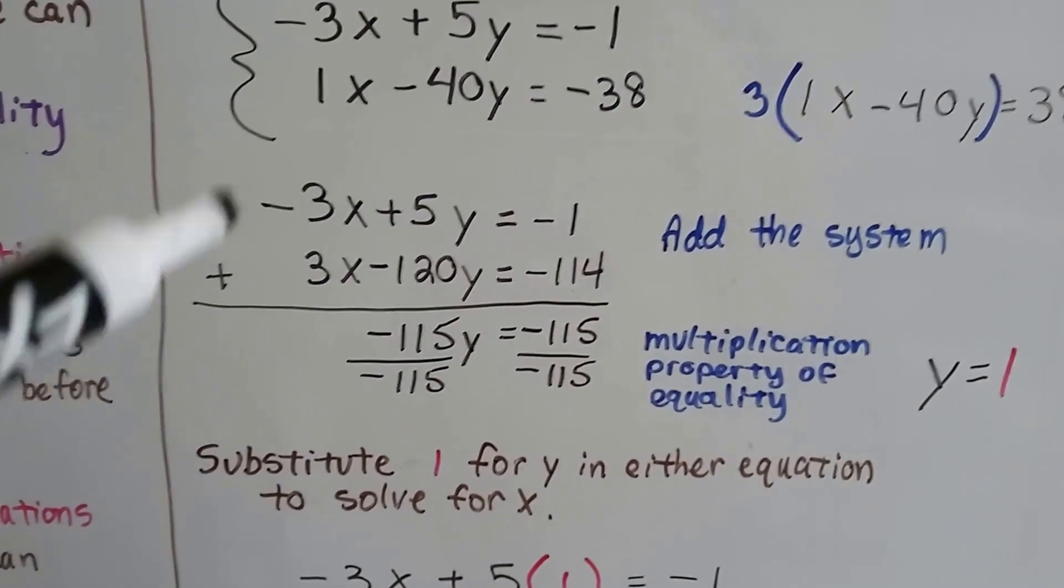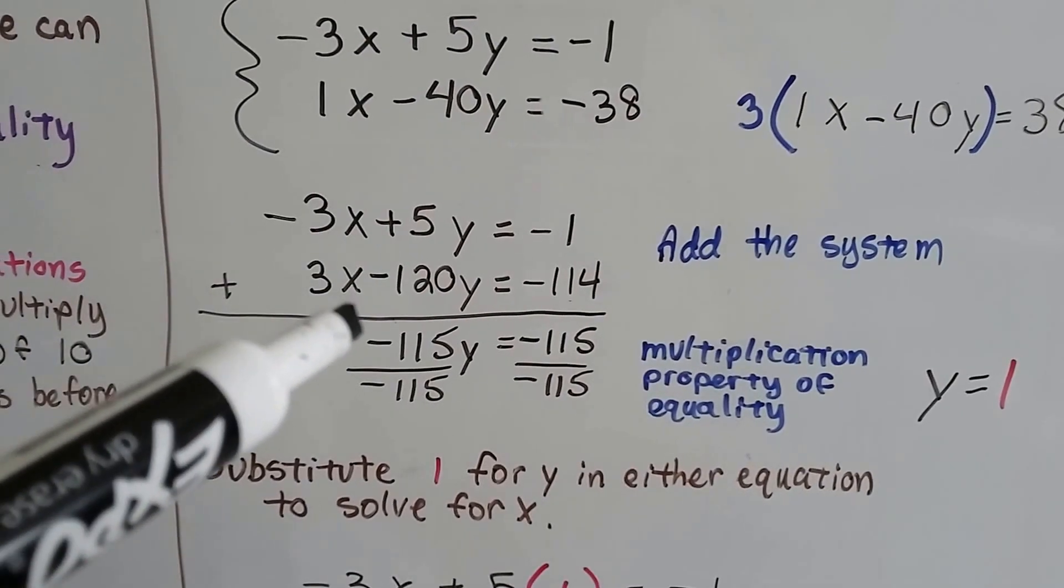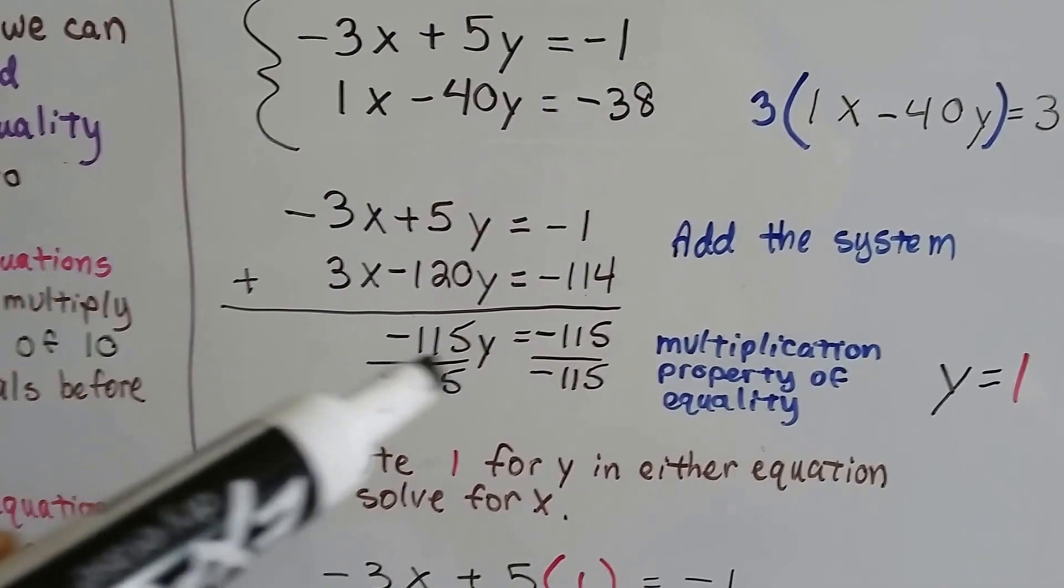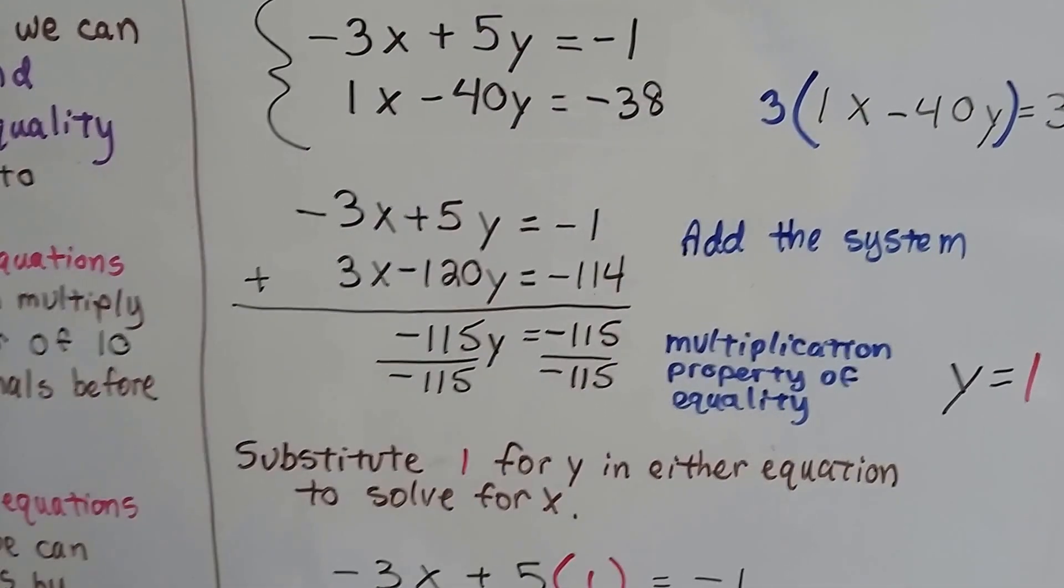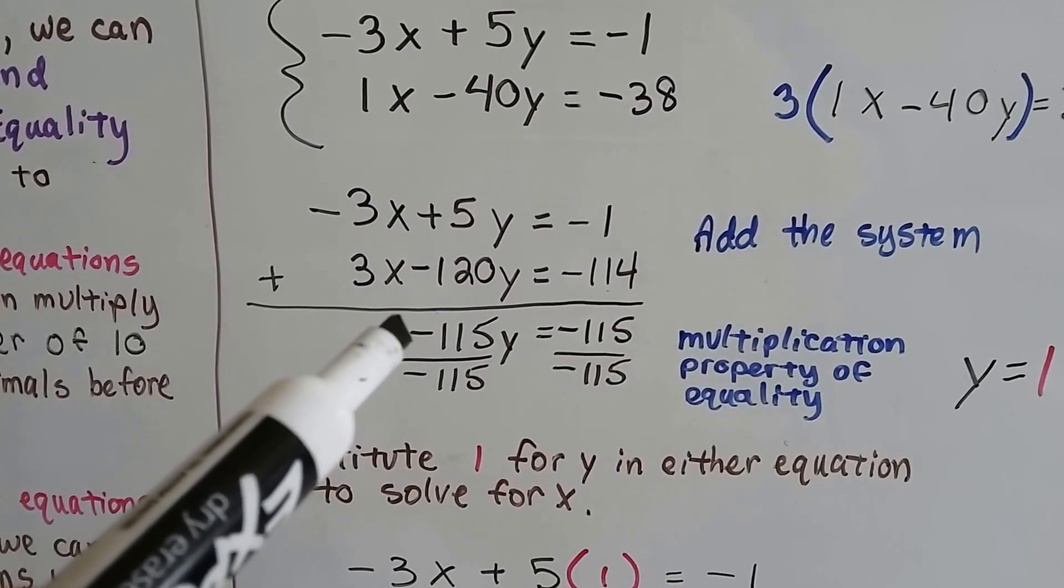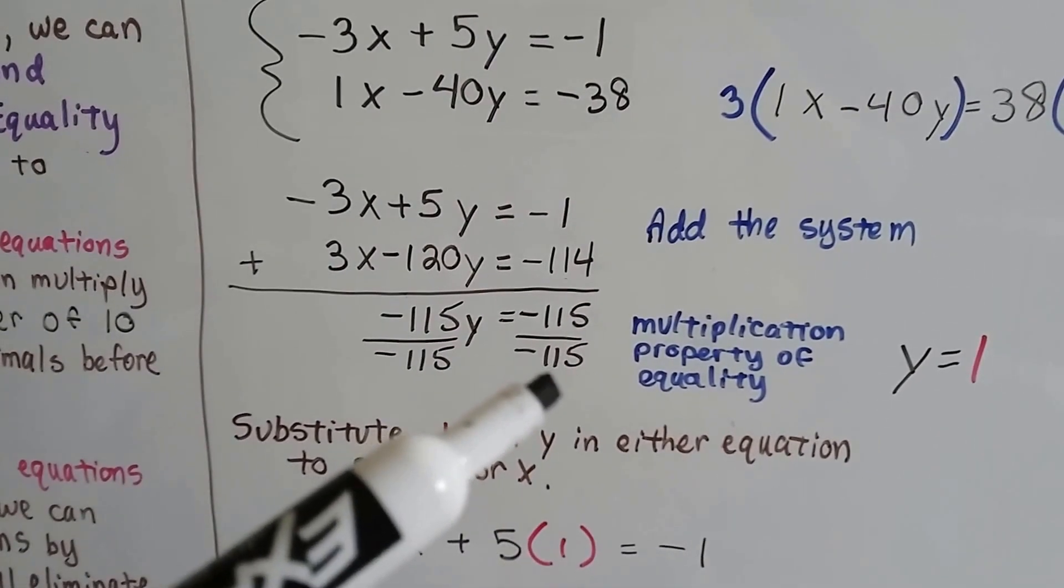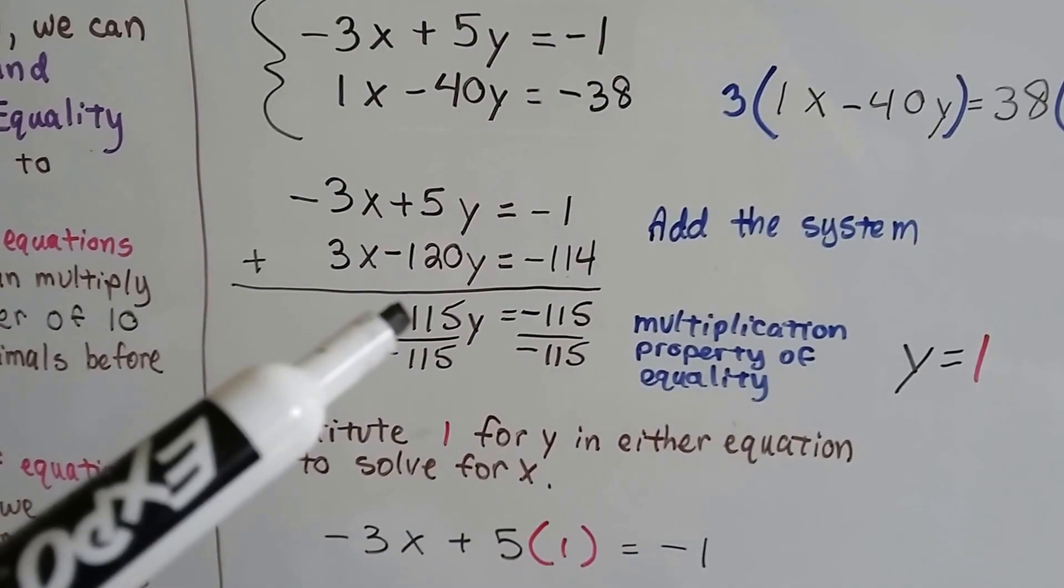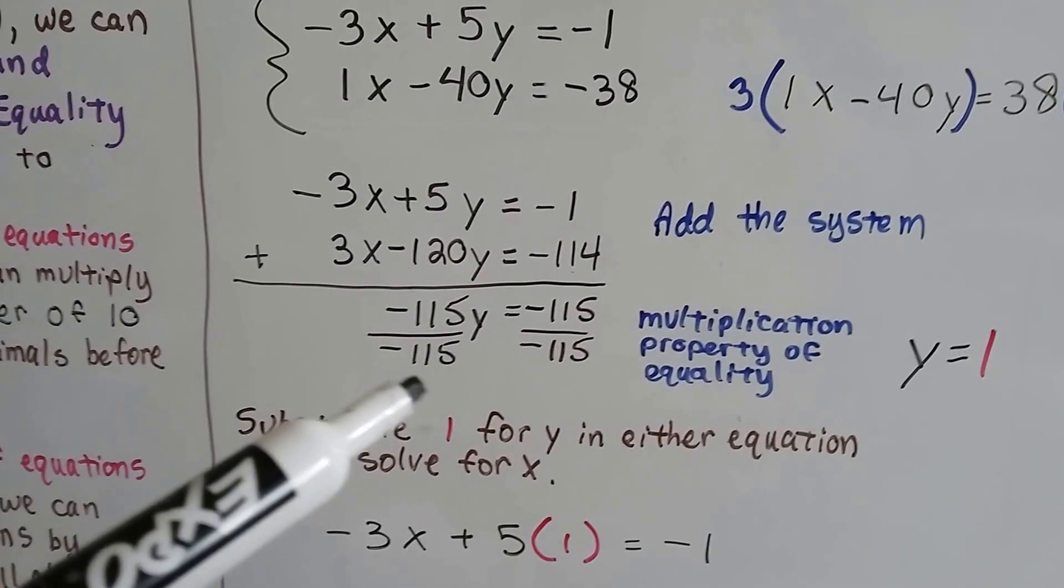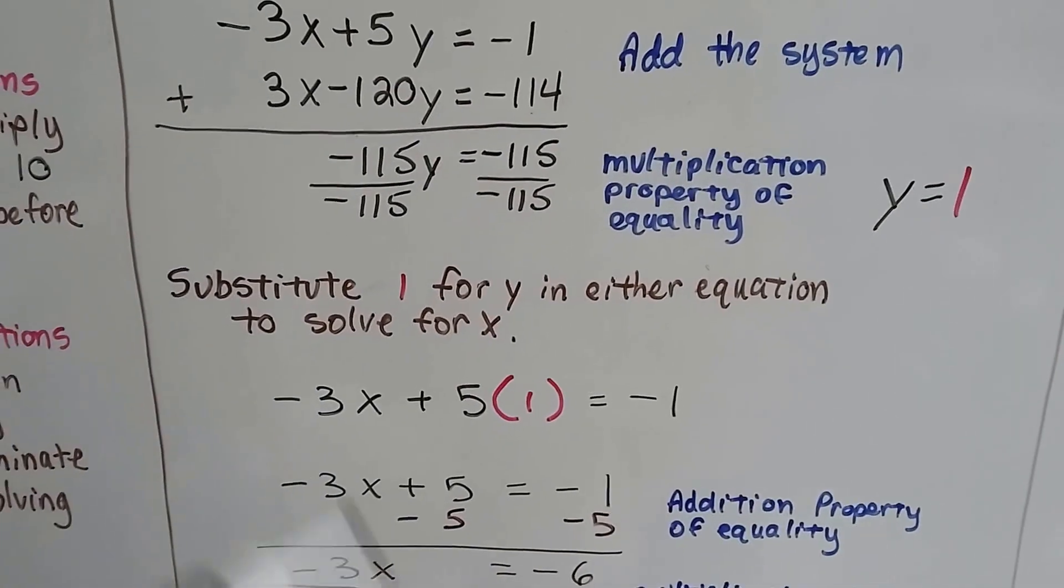Now we can add the system. We've got this zero pair that's going to eliminate themselves as an additive inverse. A positive 5y minus 120y gives us -115y, and we get -115 on this side also. We can divide both sides by this coefficient 115, and we get a positive 1. Remember, in the multiplication property of equality, dividing each side by this coefficient 115 is the same thing as multiplying it by the reciprocal. I like to do it with division when there's no fractions. And I've got a problem over here that will do it with the reciprocal.